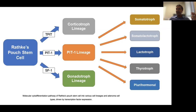The Pit1 lineage includes somatotroph adenomas (growth hormone adenomas), lactotroph adenomas (prolactinomas), and a mixed or plurihormonal tumor containing both growth hormone and prolactin. A rare functional tumor called thyrotroph adenoma produces TSH. The plurihormonal type also includes the thyrotroph adenoma. We are learning recently that Pit1 lineage tumors are actually the most invasive, particularly into the cavernous sinus — this is new research we are developing.